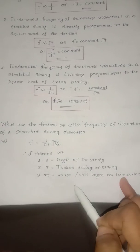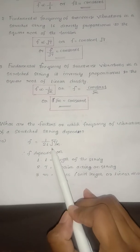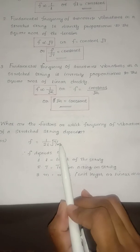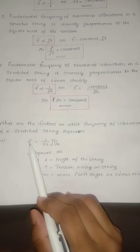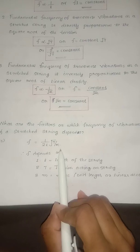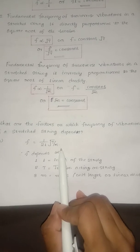What is the one term? Frequency depends on L, length of the string. Depends on tension on the string, and depends on mass per length, linear density m. Then we specify the third term.